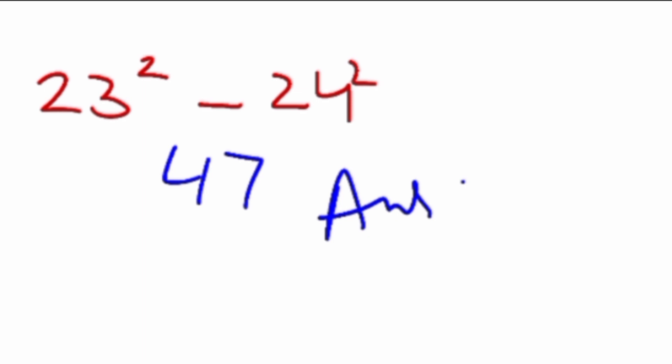Let's have another example: 23 square minus 24 square. When we add 23 and 24, we get the answer 47. This is also the answer of 23 square minus 24 square. You can verify.